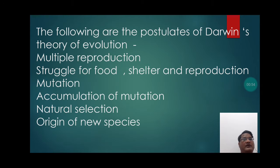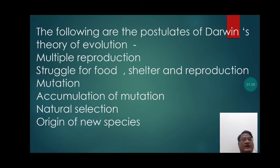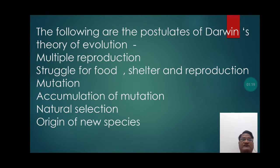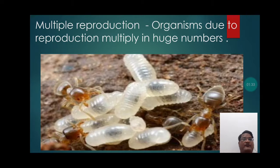The following are the postulates of Darwin's theory of evolution: multiple reproduction, struggle for food, shelter and reproduction, mutation, accumulation of mutation, natural selection, and origin of new species. These were the important postulates of Darwin's theory of evolution.